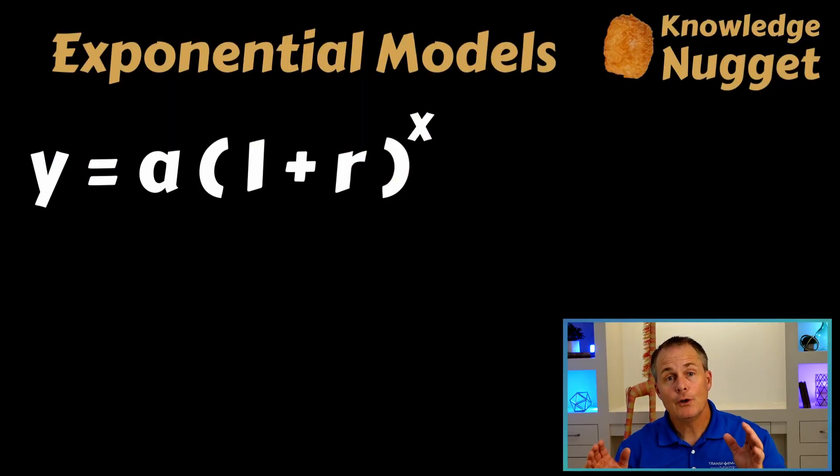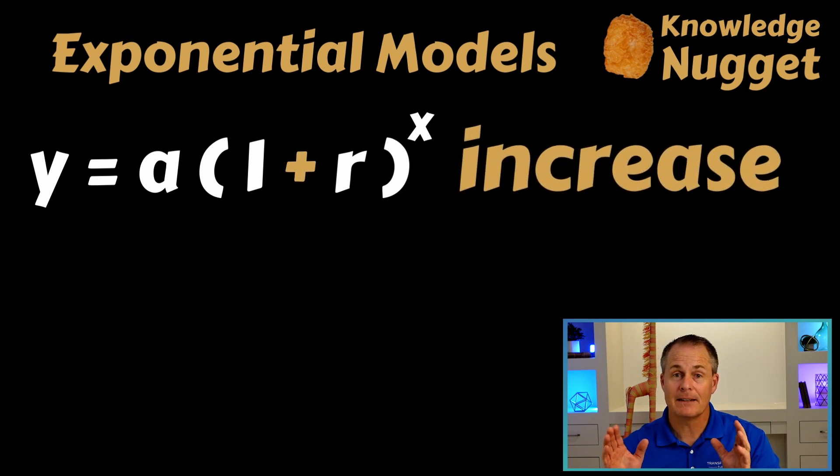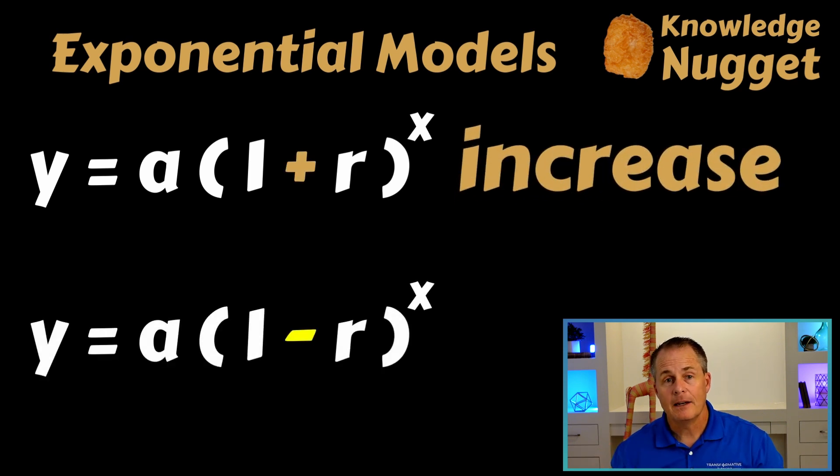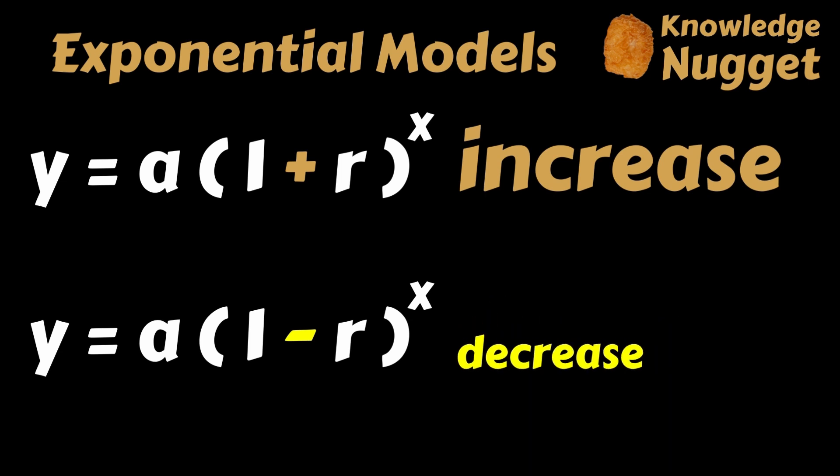Stop and think about that for a second. If you multiply something by 1, what happens? Nothing. If you want something to get a little bigger, then you better multiply it by something a little greater than 1. And if you want something to get a little smaller, then you better multiply it by something a little smaller than 1. So, there's really two versions of this formula: y equals a times (1 plus r) to the x power if you want the item to increase in value, and y equals a times (1 minus r) to the x power if you want the amount to decrease.